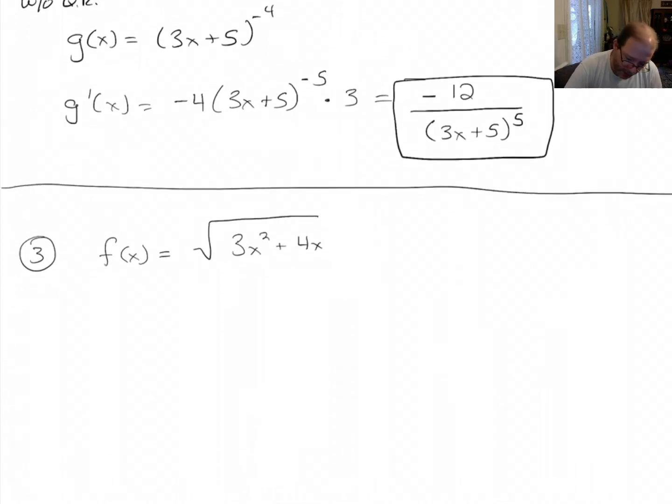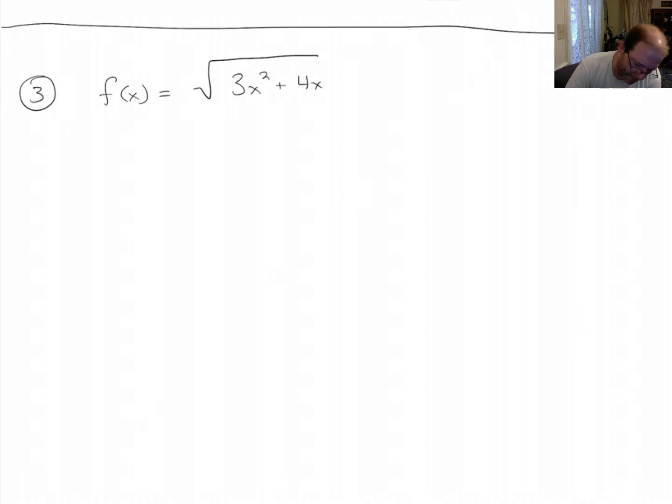Okay, let's look at this one. This problem, we've got a square root. So the way to attack this would be to do (3x² + 4x) to the one half. Then do f prime of x is 1 half times (3x² + 4x) to the minus half.